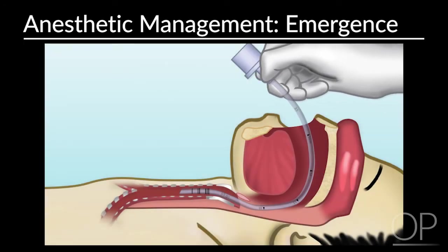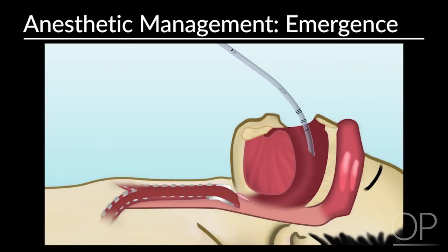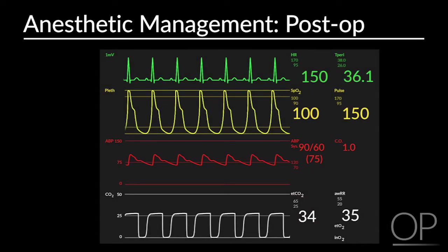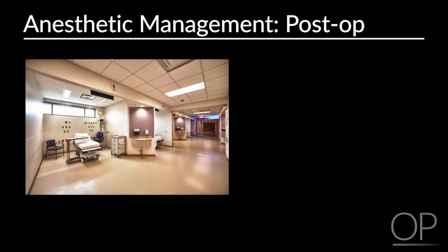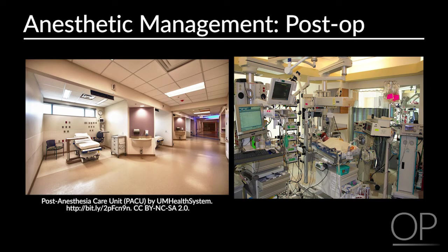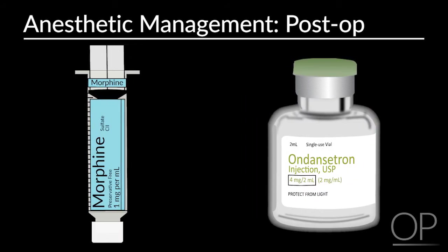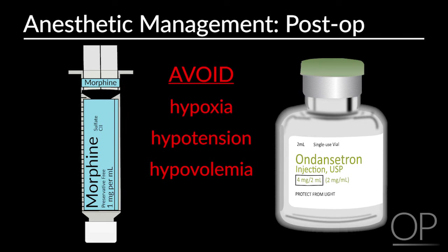It is very important to have a smooth and calm extubation of these patients. Post-operatively, adequate monitoring is essential — whether in the PACU or ICU depends on patient, surgical, and anesthetic factors. Provide adequate analgesia and anti-emesis and avoid hypoxia, hypotension, and hypovolemia. It is very important to be prepared and always stay two steps ahead of potential changes that can occur in patients with pulmonary hypertension.